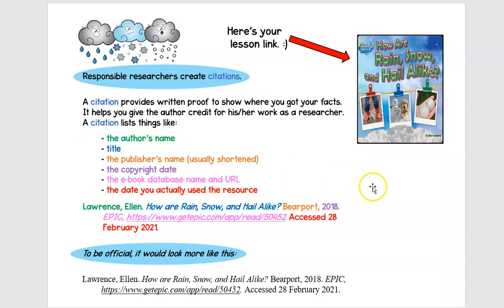I'm going to go back to this page for just a minute and have a little mini lesson. One, I want you to know that responsible researchers create citations. The reason for this is to protect you from being accused of committing plagiarism. We've talked a little bit about plagiarism this year. If you're accused of committing plagiarism, that means a teacher thinks that instead of doing your research and getting your facts from e-books or library books or internet websites, you just wrote down someone else's information and turned it in pretending it was your own work. You don't want to do that.